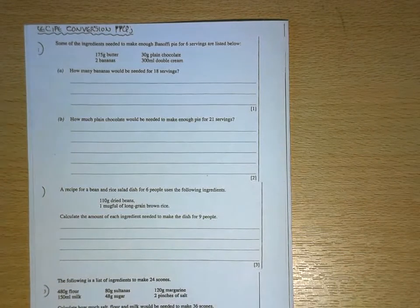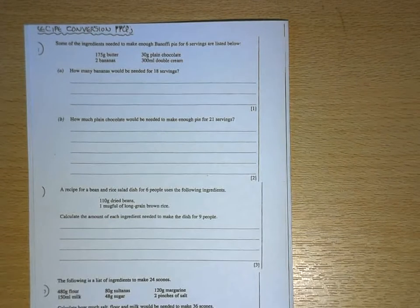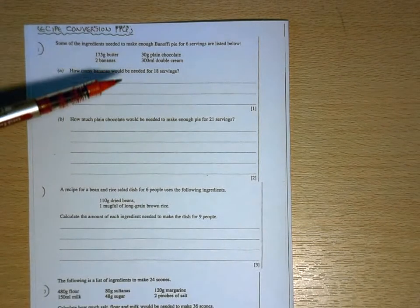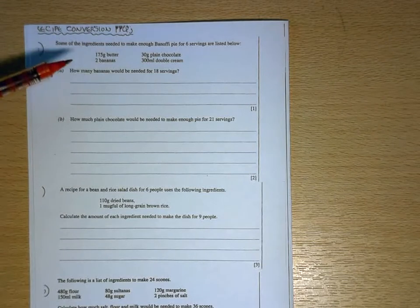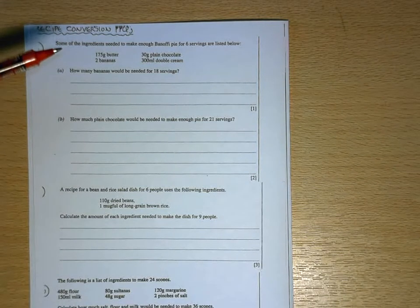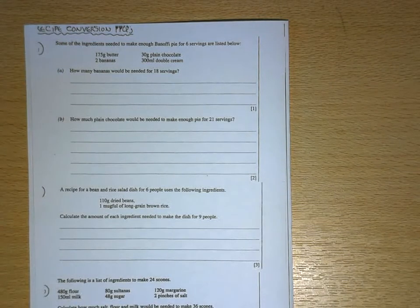Right, well quite a popular question that crops up on these GCSE papers is to do with recipe conversions where you're having to scale up or scale down the ingredients in a recipe to change the number of people that the recipe will provide for.